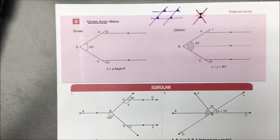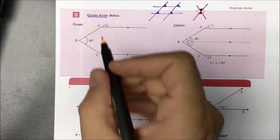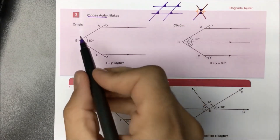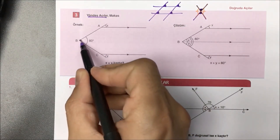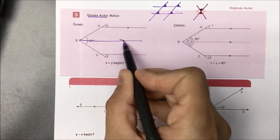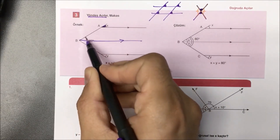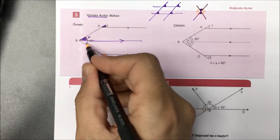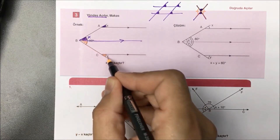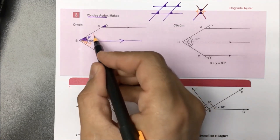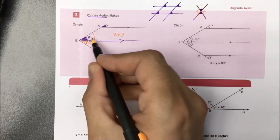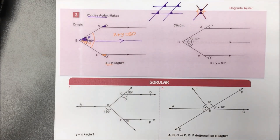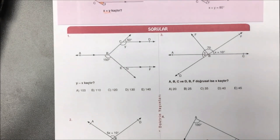Şu ikisi de birbirine eşit geldi. Açıklama örneğinde X artı Y kaçtır diye sorulmuş. Bu tür soruları çözerken pratik olarak şuradaki verilen paralel iki doğruya paralel bir doğru çizersek yöndeş açı oluştu. X şuradaki üstteki açıya eşit oldu; Y de alttaki açıyla eşit oldu. O halde bu açının tamamı 80'dir; X ile Y'nin toplamı 80 oldu. Aradığımız yanıt 80 olarak bulunmuş oldu.